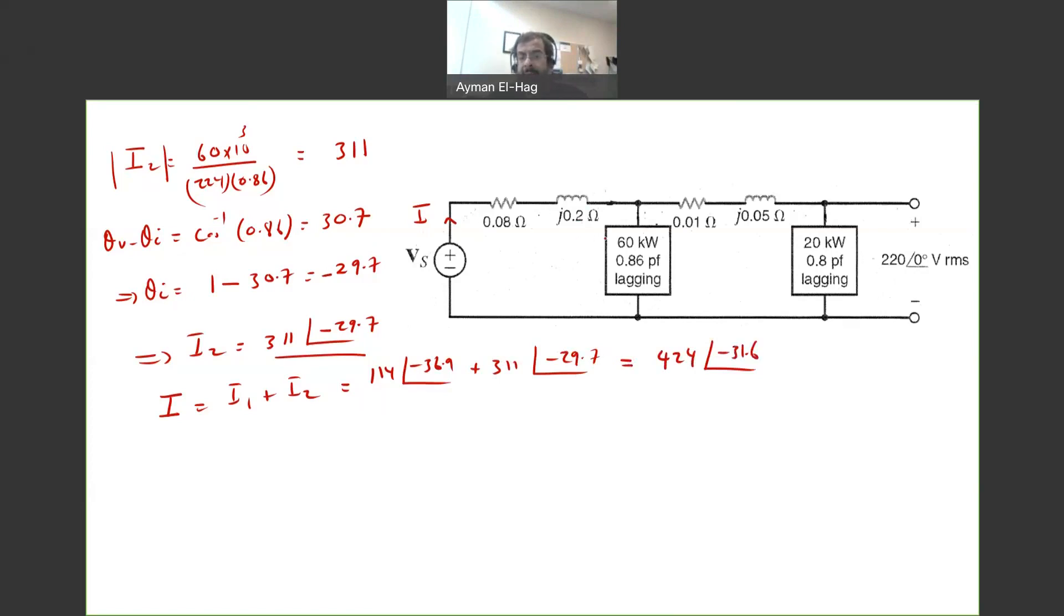So now I found this current, I know this voltage here, which is found from the previous step, which is 224 angle of 1. I will need to apply KVL to this loop to find your Vs. So your Vs is equal to your I, which is 424 angle of minus 31.6 times the line impedance, which is 0.08 plus j0.2 plus the voltage at this load, which is 224 angle of 1. And if you do the calculations, you will find this is equal to 303 angle of 11.1 volts. So this is your Vs.